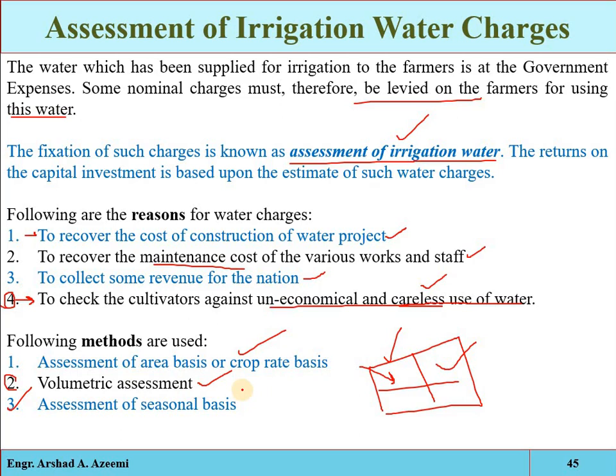This concludes lecture number five, which covered basic terminologies, direct and indirect methods for determination of consumptive use, different irrigation efficiencies, and how those efficiencies are applied to actual crop water requirements to determine the field irrigation requirement and gross irrigation requirement, along with assessment charges for irrigation water. In the next lectures, we will start a new chapter on the canal conveyance system.